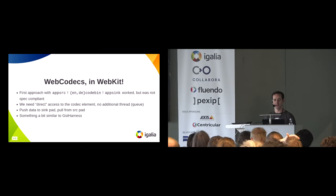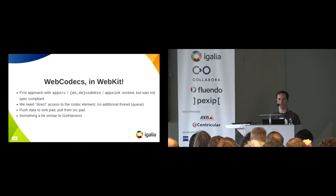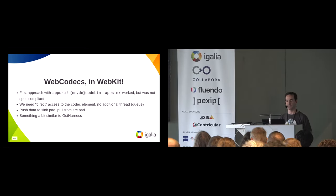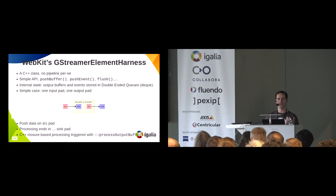At first, I started with decoding at a source sync — the obvious thing to try. It was working, but it was not really spec-compliant, because we need direct access to the decoder or encoder. I considered using GStreamer's testing harness, but that's more meant for testing. So instead, I used a similar design and built a harness in C++ in WebKit with a simple API: you basically push a buffer, push events, and then you can process the output buffers of the decoder or the encoder.